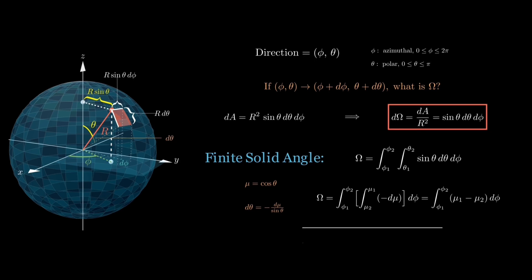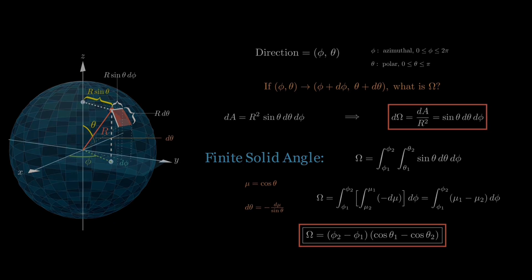So you see, we finally obtain here that omega equals phi 2 minus phi 1 multiplied by cosine theta 1 minus cosine of theta 2. We'll soon try to plug in some values and see if this can allow us to replicate a familiar result. But before that, let's look at some special cases.